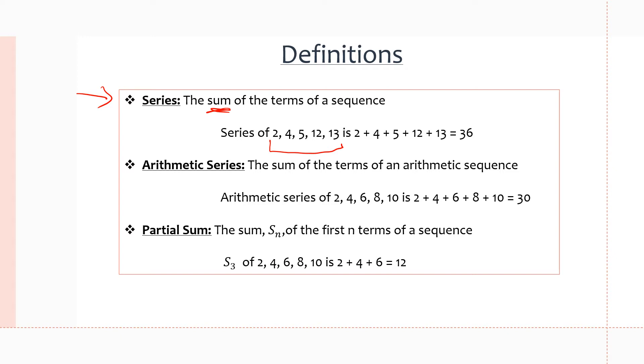We have 2, 4, 5, 12, and 13, a sequence of 5 numbers, and those are the terms. And the series of that sequence is 2 plus 4 plus 5 plus 12 plus 13, which will give us 36. So we're just adding the terms in a sequence, that's what our series is.